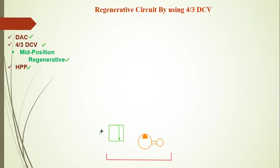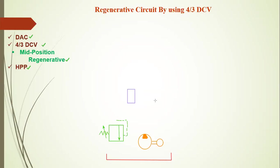Give one bypass line to the pressure relief valve, because sometimes the valve is choked or not working — the excess oil can then pass from the hydraulic circuit back to the hydraulic tank. Then draw one 4/3 direction control valve. Draw the direction control valve with the mid position set to regenerative.